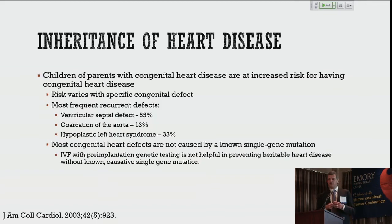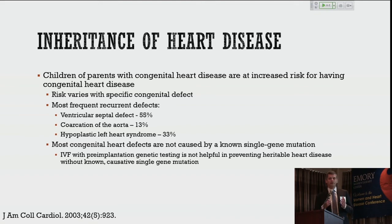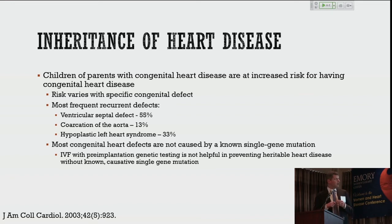In terms of the inheritance of heart disease — not all heart disease has a known single gene causative mutation. In many cases people have congenital heart disease and we know there's an increased risk their children will have congenital heart disease, but we can't identify the exact gene causing it, so this is the type I can't prevent in subsequent generations. The most frequent heritable defects include ventricular septal defects, coarctation of the aorta, and hypoplastic left heart syndrome. Genetic counseling is always very helpful for these patients.